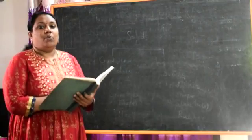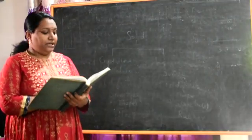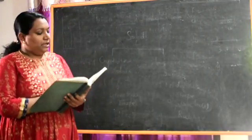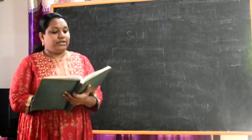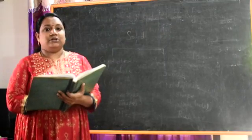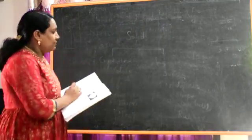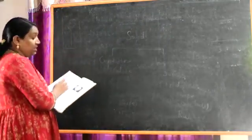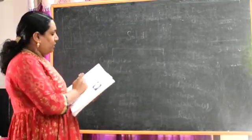Students, go to page number 178, Volume 1. There is a tabular column which shows the difference between crystalline solids and amorphous solids. We have several points and will discuss them one by one.